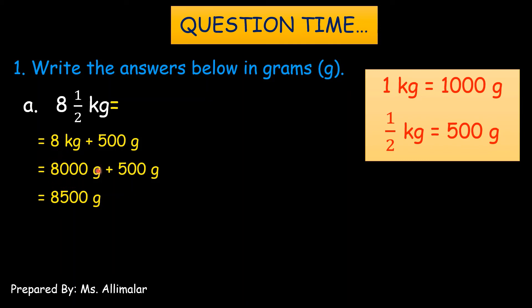Why 8,000? Because 1 kg is equals to 1,000 grams. So, how about 8 kg? 1 kg, 1,000 grams. 2 kg, 2,000 grams. So, 8 kg will be 8,000 grams. So, you have to plus with this 500 grams because you have 1 over 2 kg here.